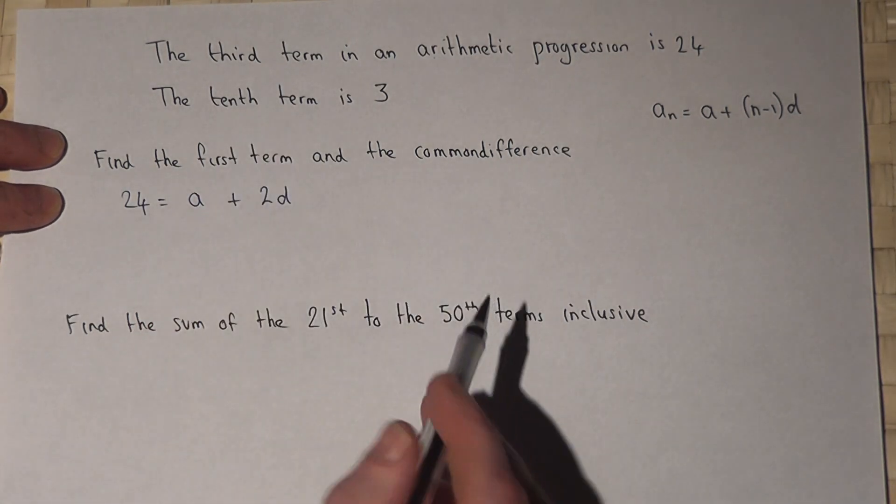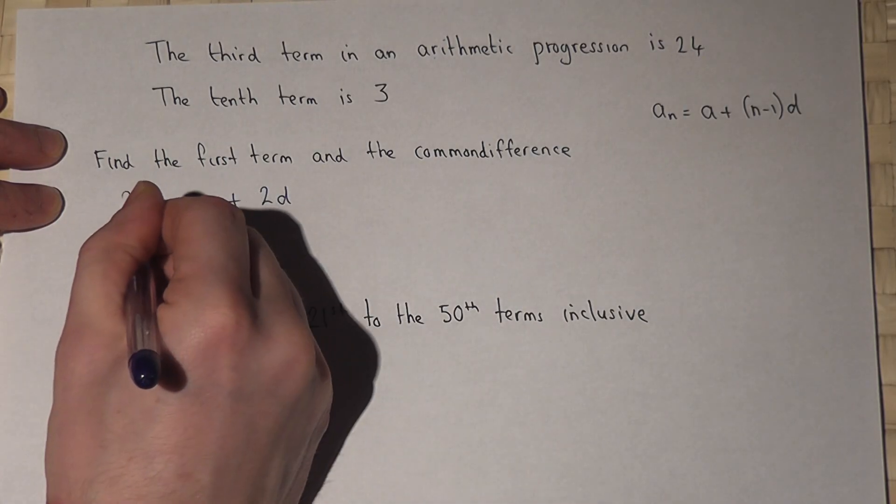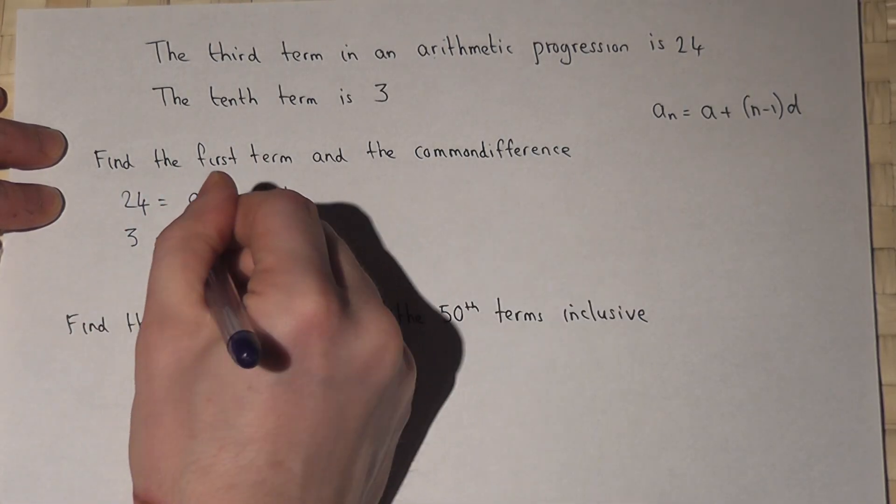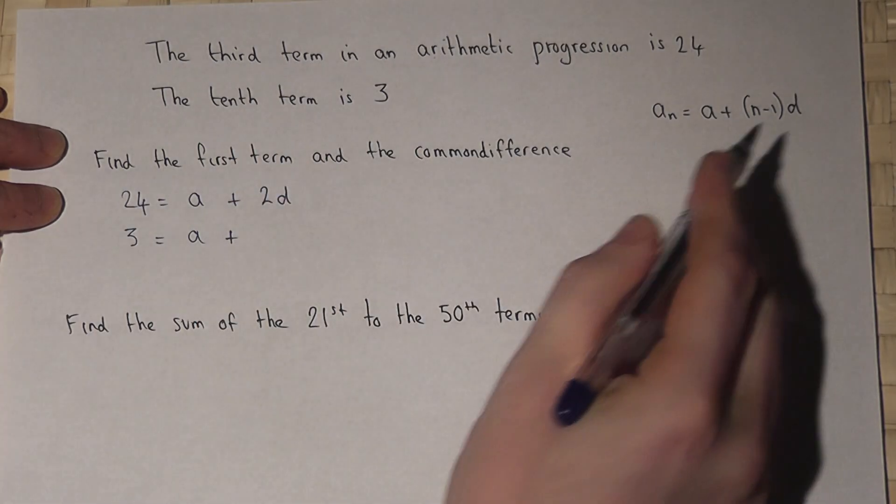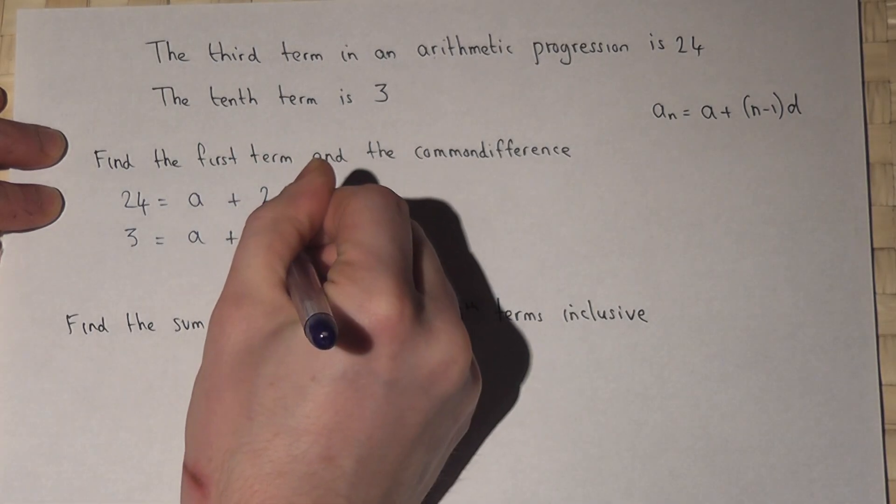We're also told the tenth term is 3. So the tenth term, 3 equals a plus 10 minus 1, which is 9, 9d.